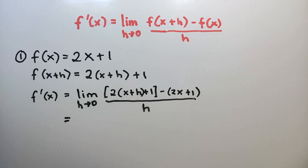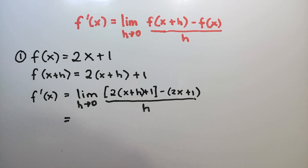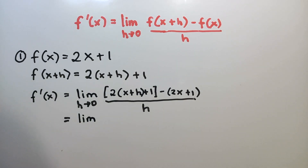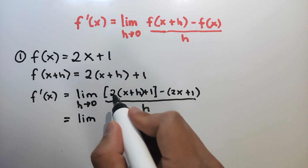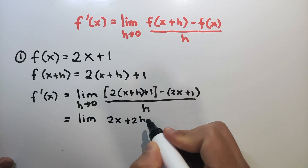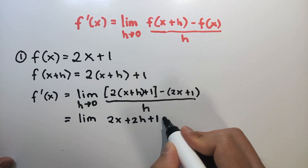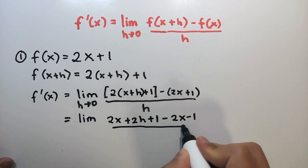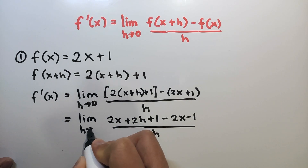If we're going to evaluate the limit of this function, we'll get the indeterminate form 0 over 0, which means to find the real limit we need to simplify the function. So distribute 2: we have 2x and 2h, and then plus 1 minus 2x minus 1, over h as h approaches 0.